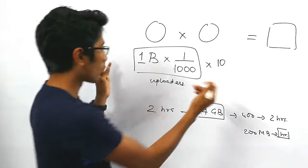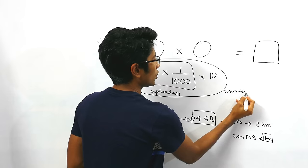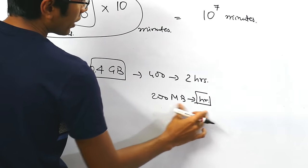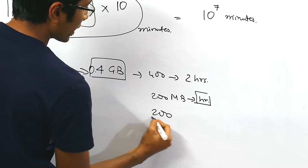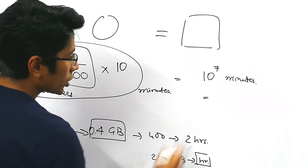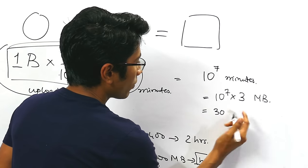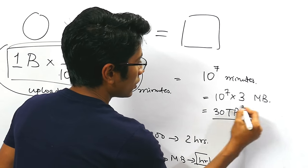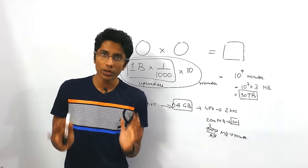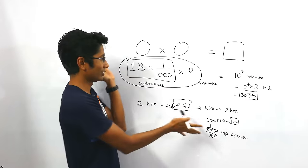You have the total number of minutes being expressed by this number, which happens to be 10 raised to the power of seven minutes and 200 MB per hour. So that is 200 by 60 MB per minute. So 3 MB per minute, the total amount of data you need here is 10 raised to the power of seven into three, 30 terabytes of data is required here. So this is the approximate amount of storage you need to just keep raw footage of YouTube on your storage disks.